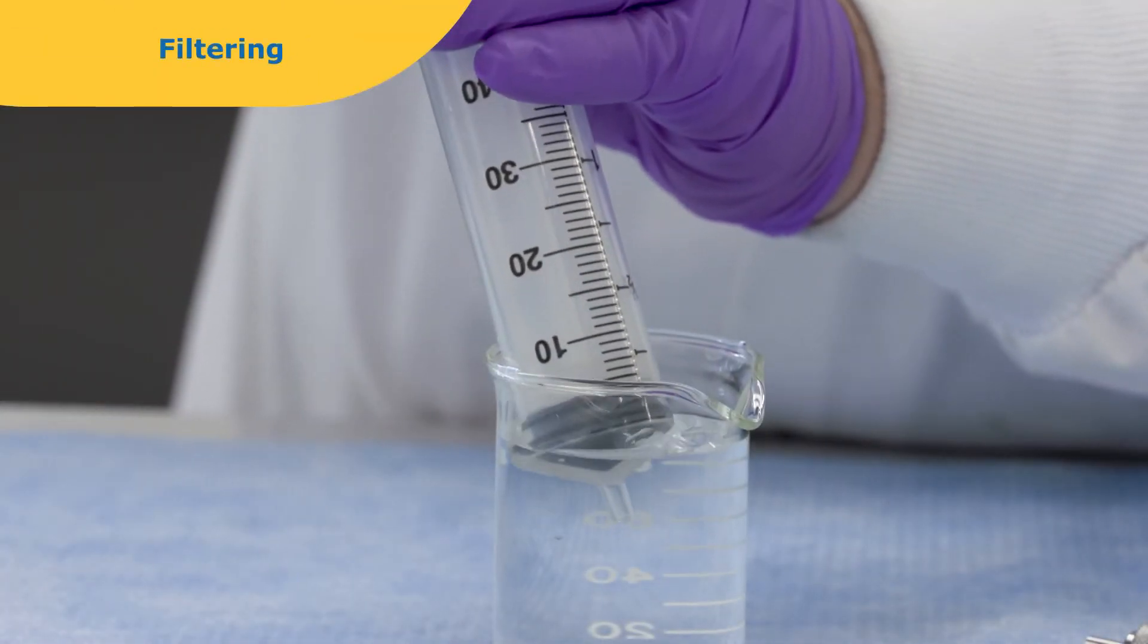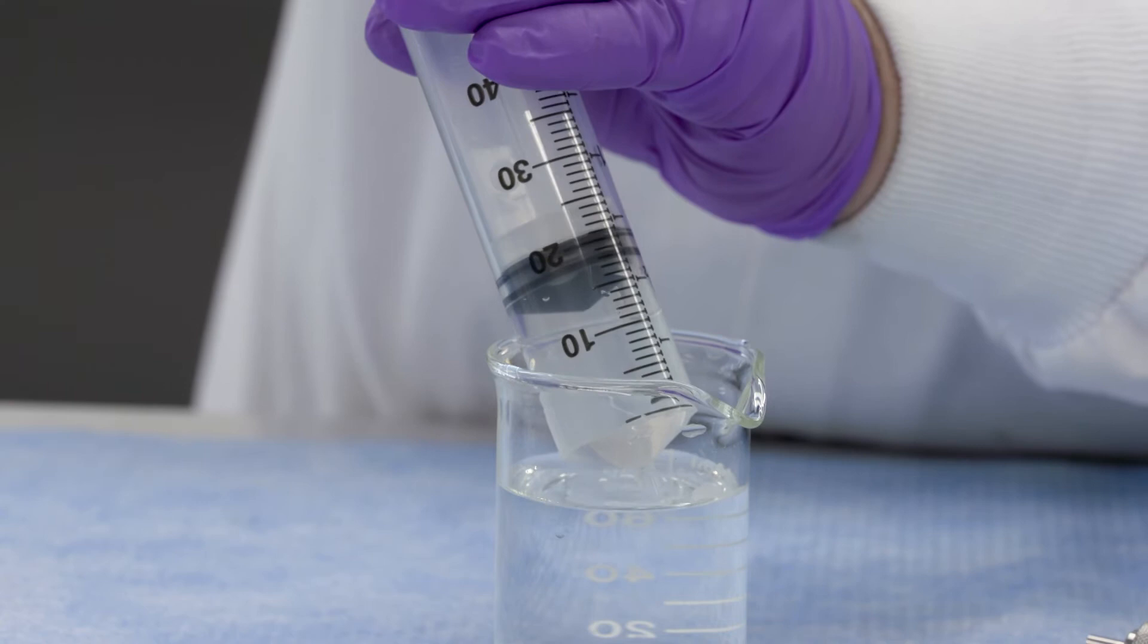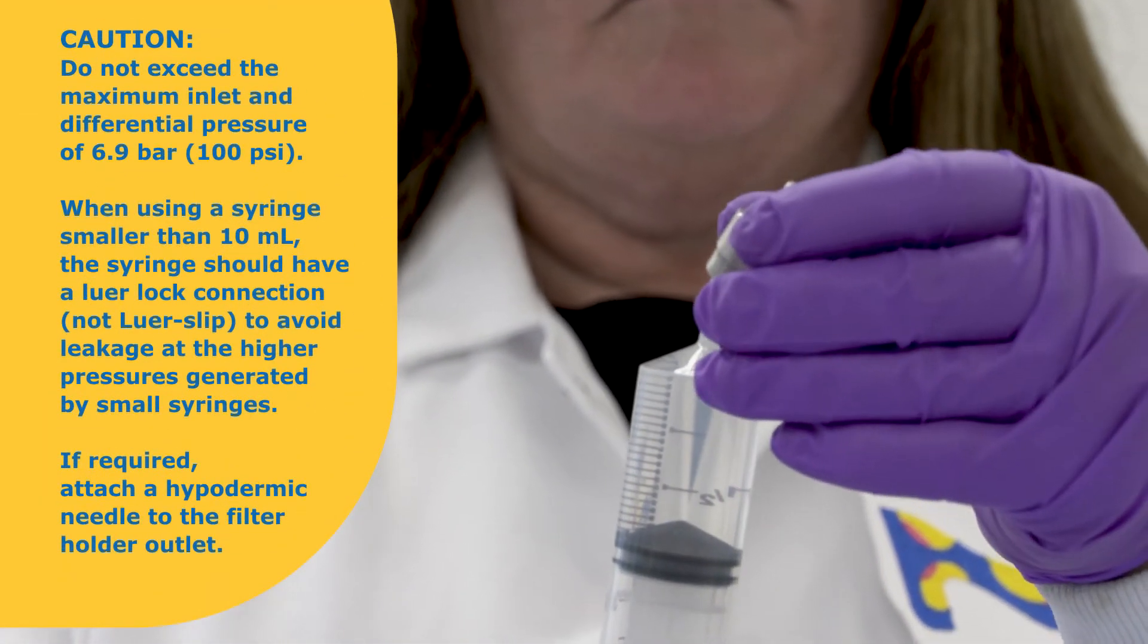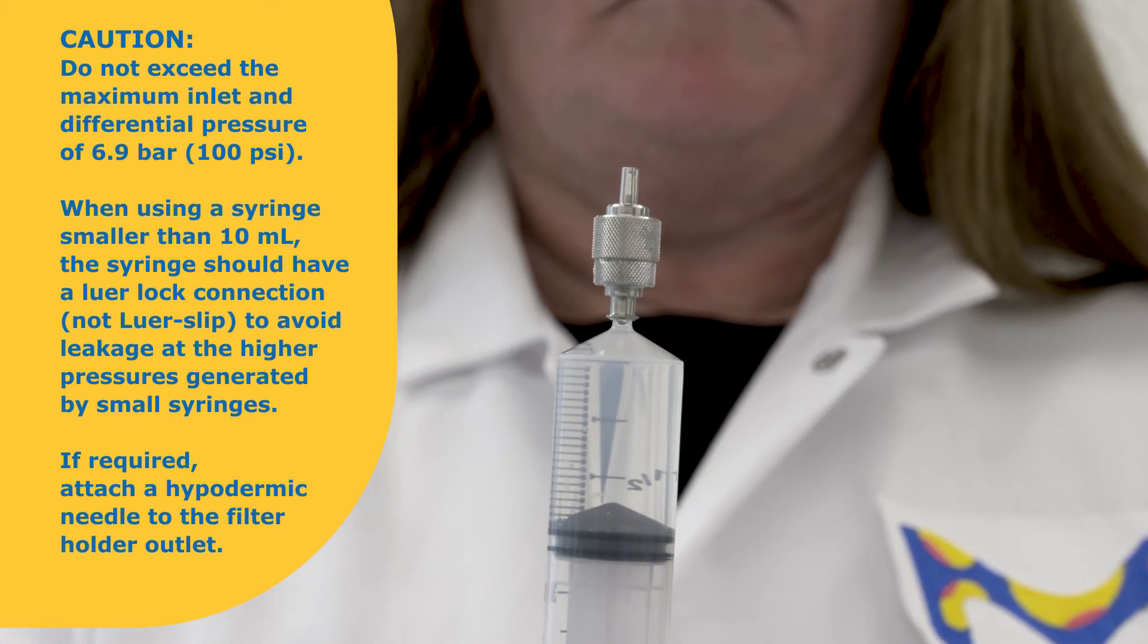To use the SWINI device to filter a sample, draw the unfiltered sample into a syringe. Attach the luer lock inlet of the filter holder to the syringe. If required, attach a hypodermic needle to the filter holder outlet for dispensing the filtered liquid.